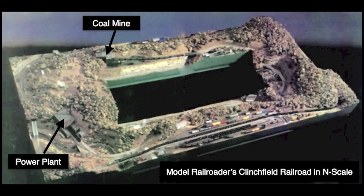On that layout, an industrial spur went to a power plant. From the power plant, hidden tracks connected to a coal mine on the other side of the hill, and empties and loads moved in opposite directions at the same time. I certainly remember that Clinch Field layout — it had a big influence on an N-scale layout I built in the 1980s. Empties in and loads out can be an effective way to create the illusion that industries on a layout are being served by coal trains.